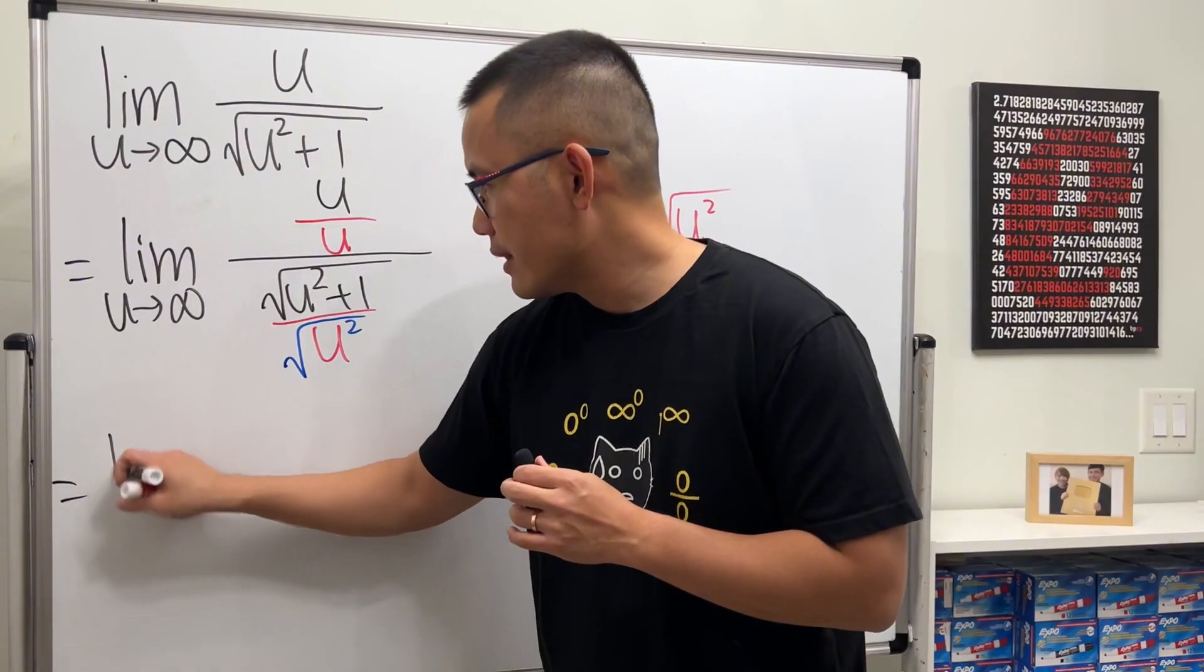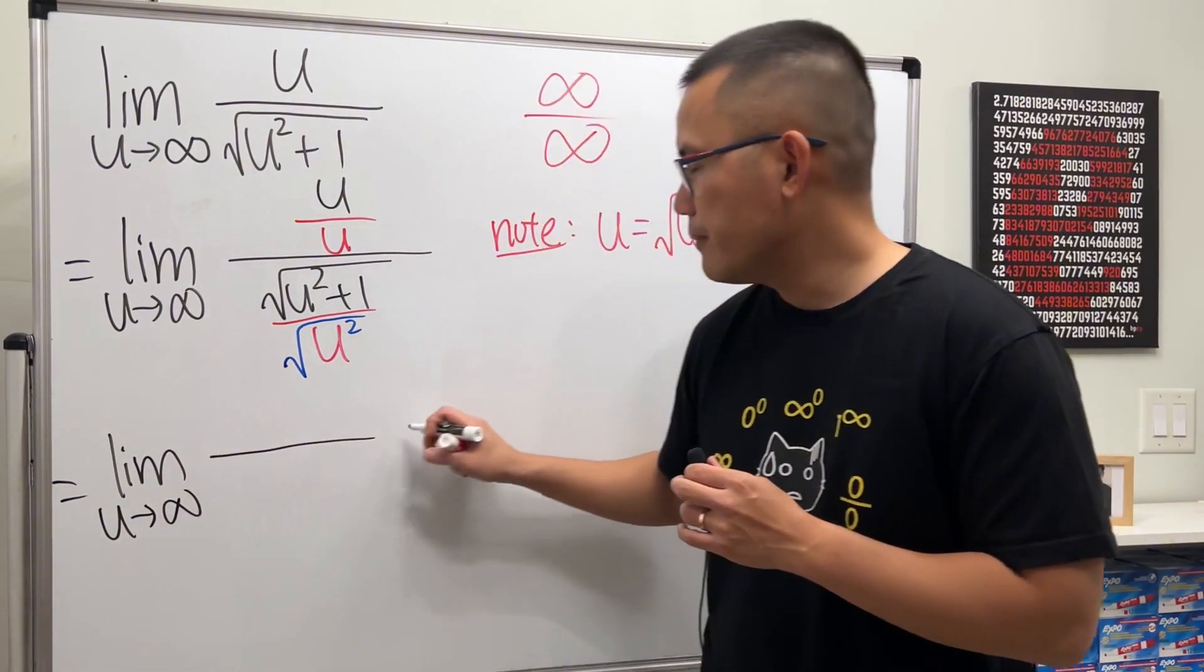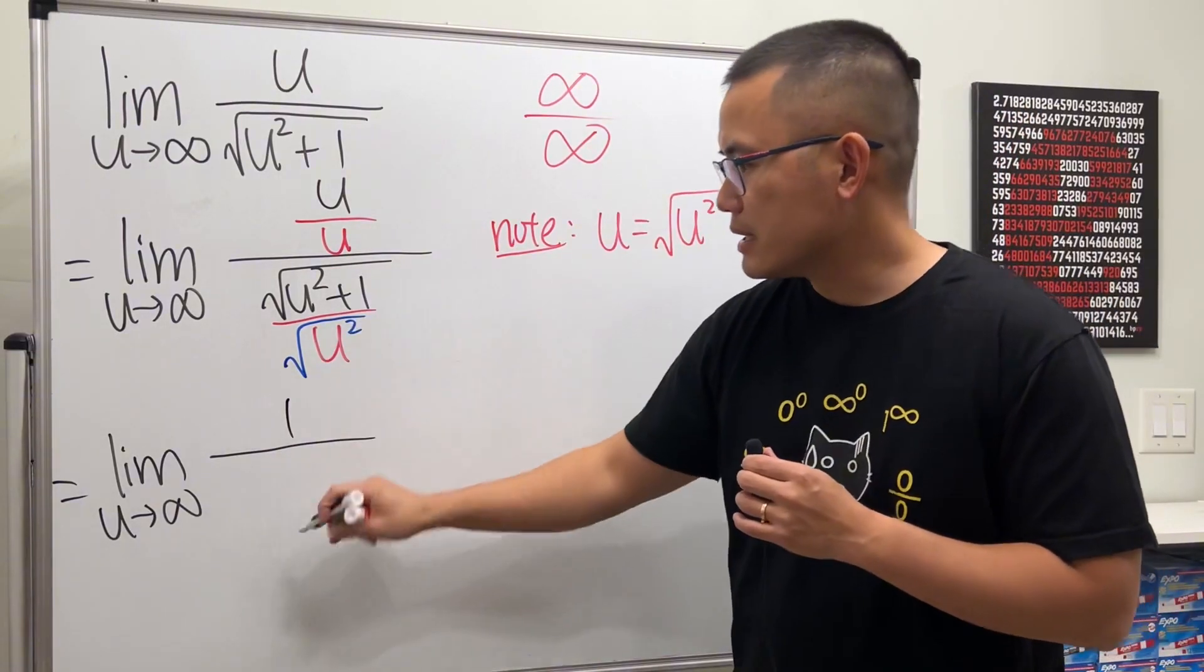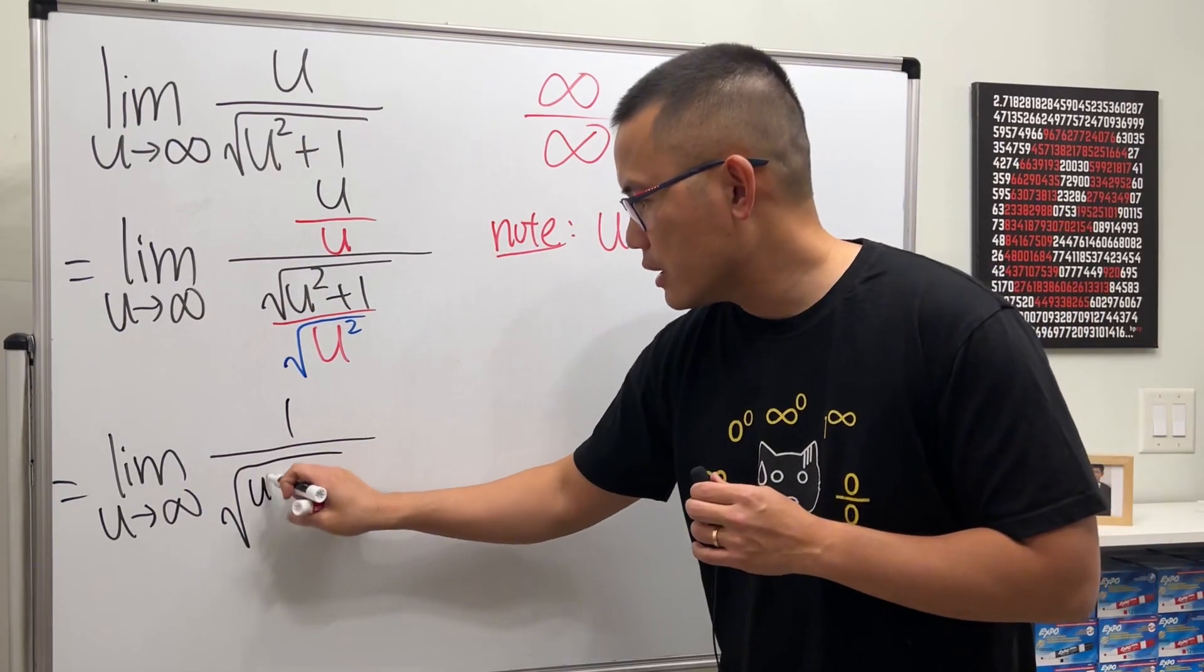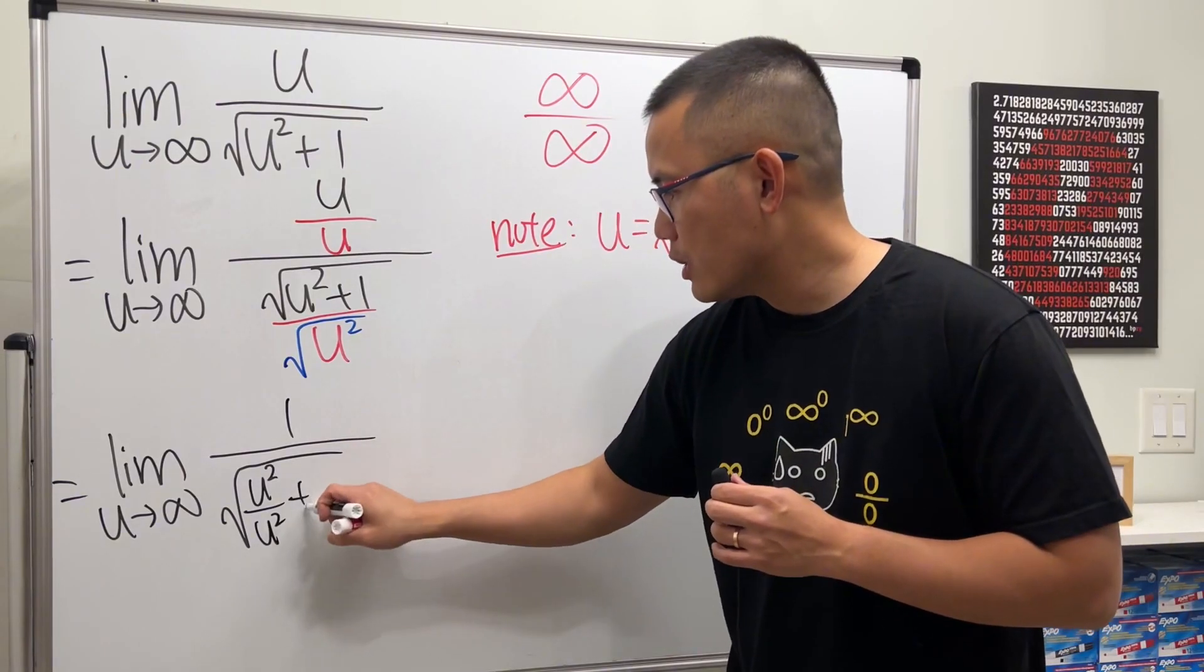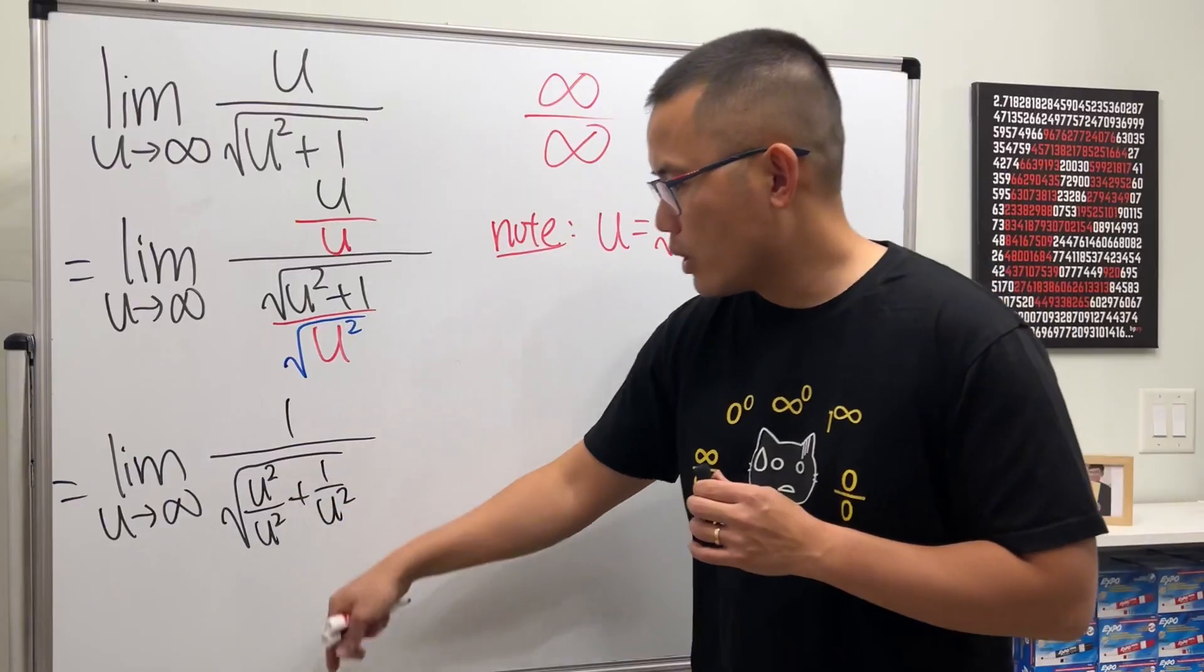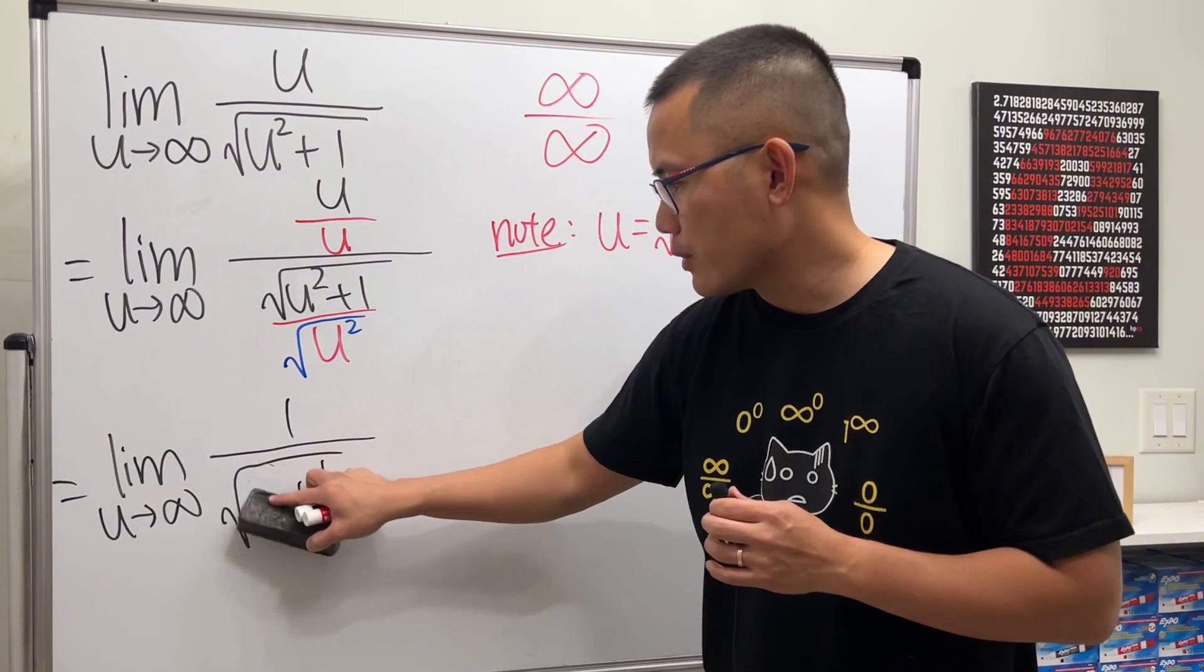So, we will have the limit as u going to infinity of, on the top it's just going to give us 1. On the bottom, open the square root, we have u squared over u squared, and then plus 1 over u squared. And, of course, u squared over u squared is just equal to 1. So, we can fix that.